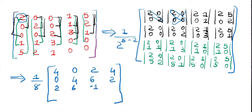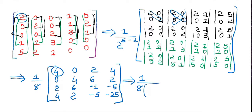Then here it will be 2×0 minus 1×1, which is minus 1; and 2×0 minus 5×1, that is minus 5. Then 2×2 which is 4, minus 2×1. Then 2×1 minus 0×5, and then the last one which is minus 25. Here we got the pivot element as 4, so we will write this as 1 upon 8 into 4 raised to (4 minus 2). It is a 4×4 matrix and 2 is a constant.